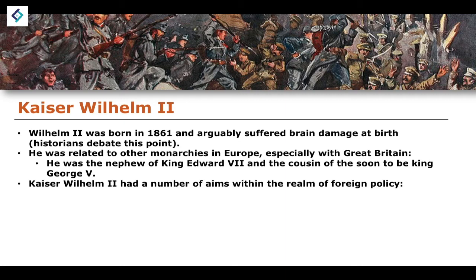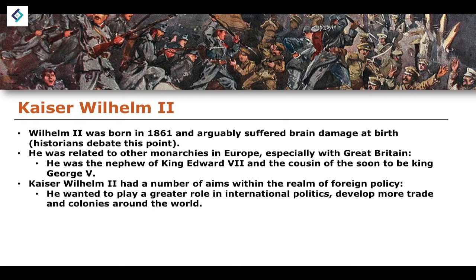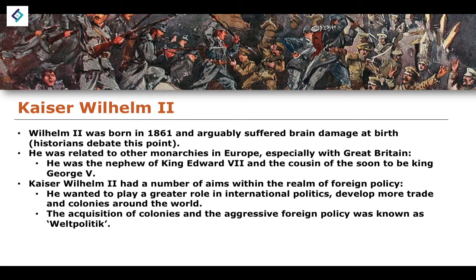Kaiser Wilhelm II had a number of aims within the realm of foreign policy. He wanted to play a greater role in international politics, seeing Germany as increasingly expansionist — developing more economic communities around the world, with greater trade, colonialism, and imperialism, and a growth of the German Empire through acquisition of colonies. This aggressive foreign policy was known within Germany as the Weltpolitik — a broad collection of policies that were increasingly expansionist, imperialistic, and aggressive in terms of colonies around the world.